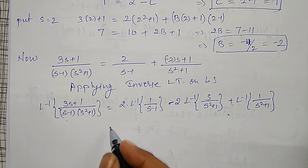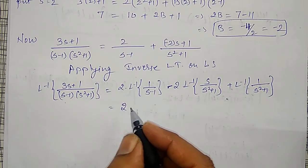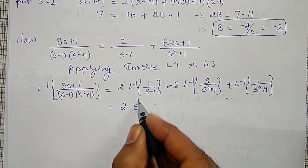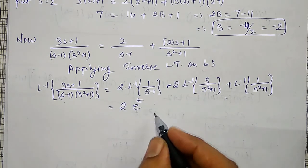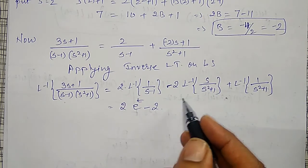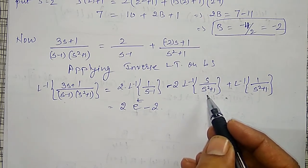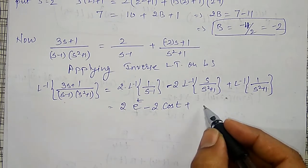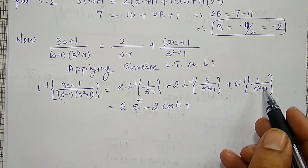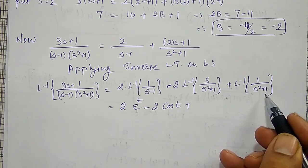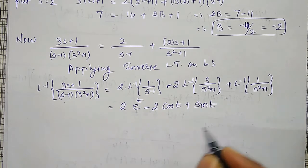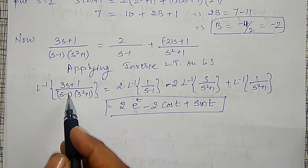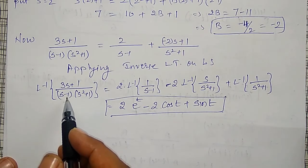That gives: 2·e^t minus 2·cos(t) plus sin(t). This is the inverse Laplace transform of f(s), which I am going to use in equation 1.